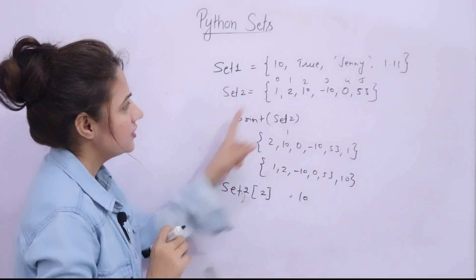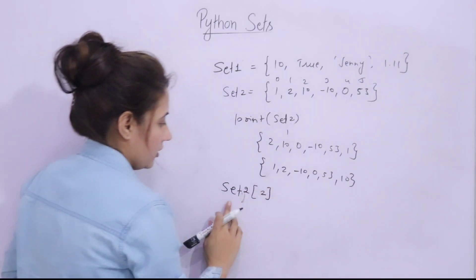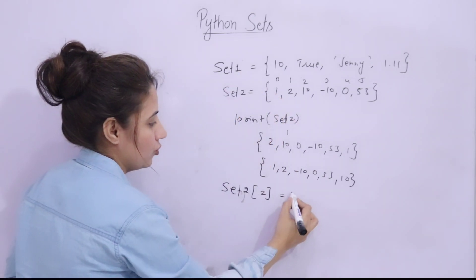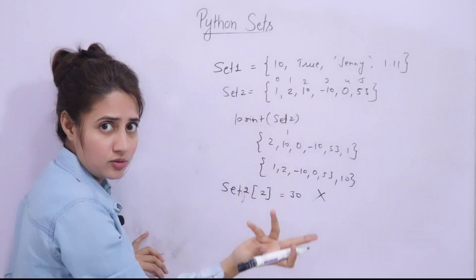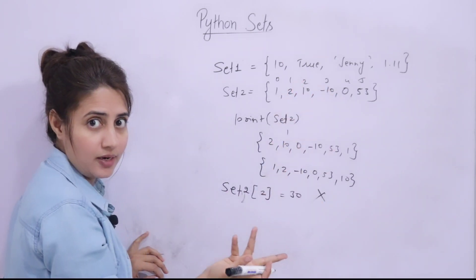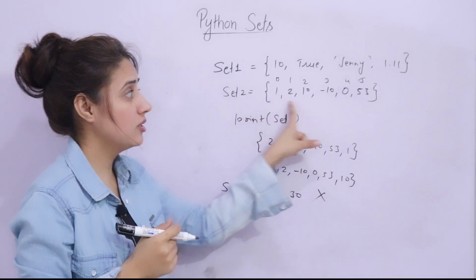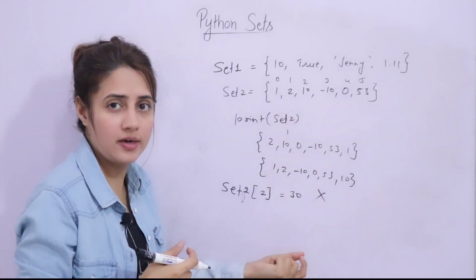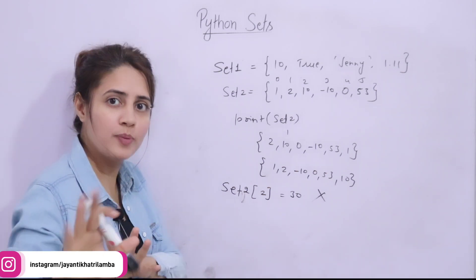Set items are also unchangeable — you cannot change individual items. For example, if I try to assign a new value at index 2, this is not allowed because indexing itself is not possible. However, you can modify the complete set: you can add items or remove items after creating the set using methods like add and remove.